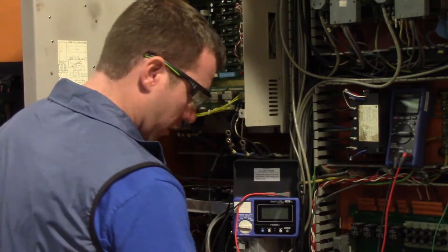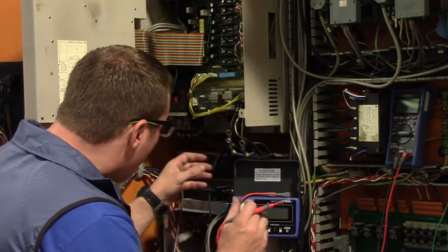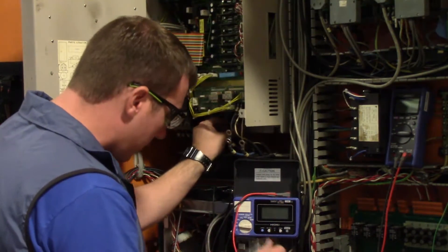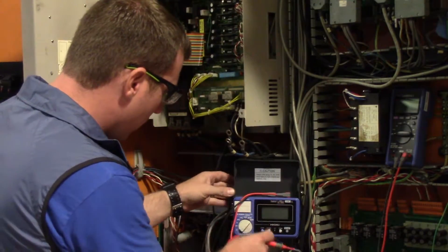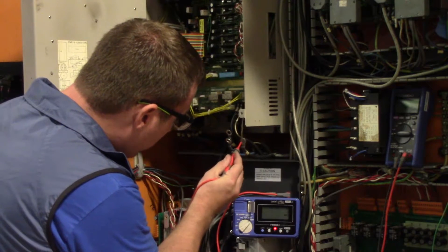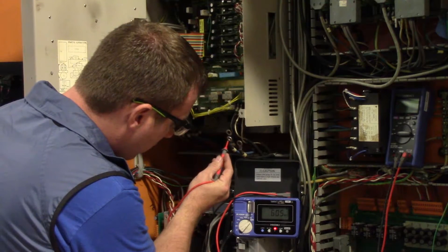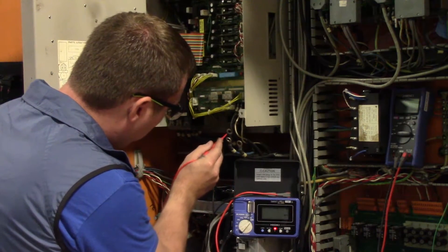We're going to use our insulation tester, our megger, and we'll make sure we have a good ground. I'm using the machine ground here, run it on the thousand volts setting. And we're going to check W and we're grounded, grounded.